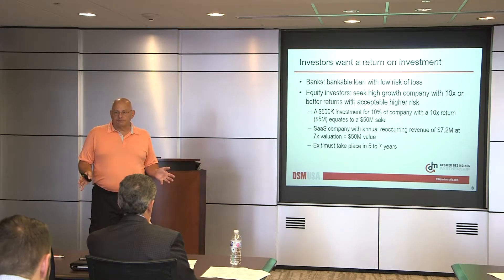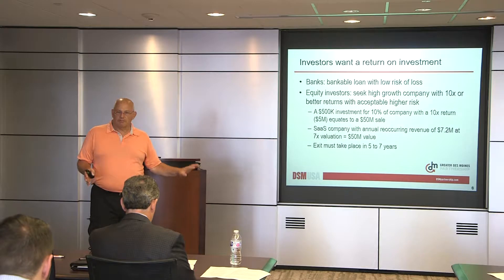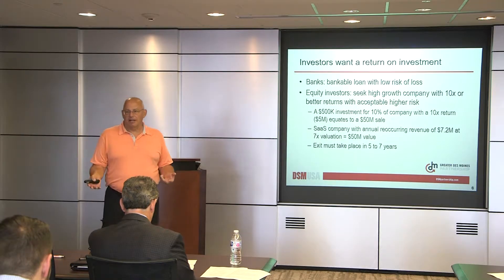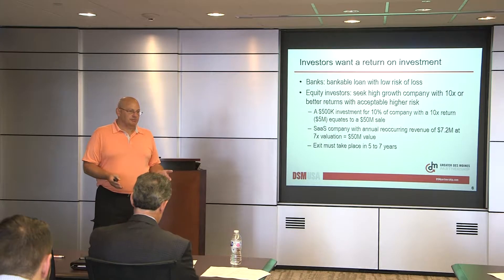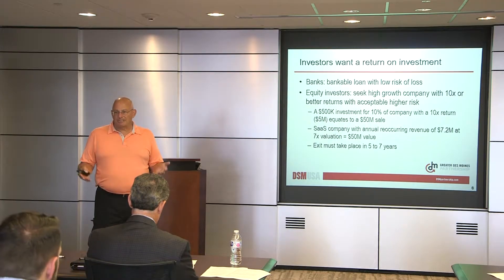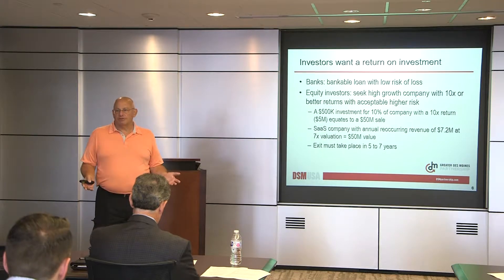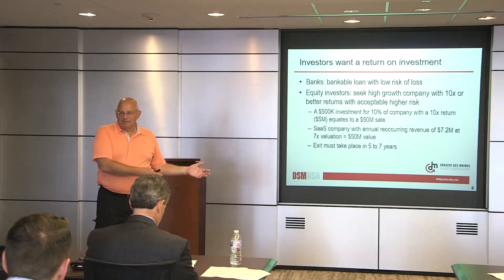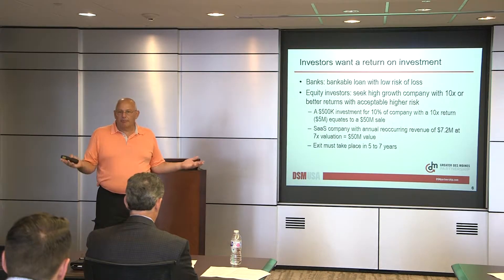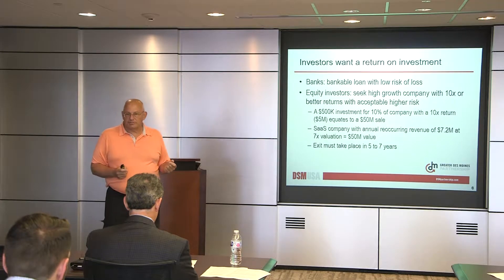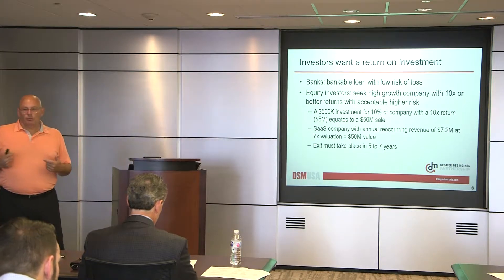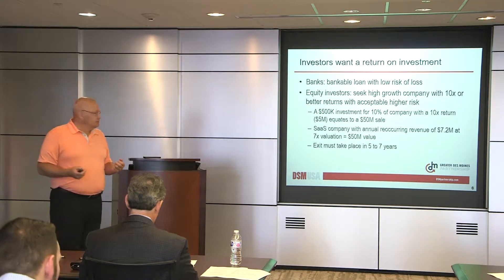Eight of those companies will disappear — I'm out $400,000. So of my original half million, I've got $100K left. The ninth company will probably return my money, not much more. That leaves me with a $50,000 investment in year five, and if I don't get 10x, I'm actually going to lose money compared to what I would have made in the stock market. That's why angel investors are looking for such a high return.